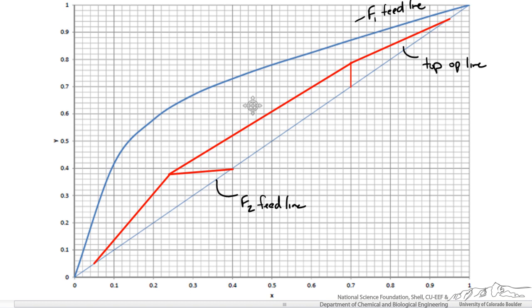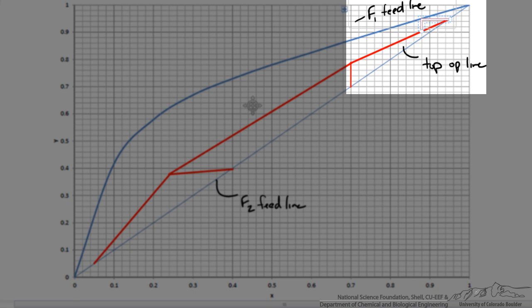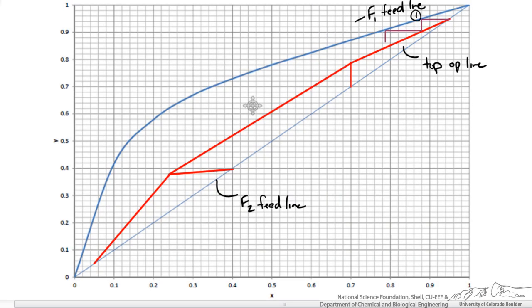At this point we can start drawing our stages. We would start at the top since we have a total condenser. That is our stage 1. We would continue this until we get to crossing our first operating line and we go down to our second.